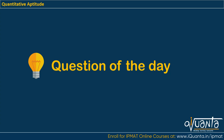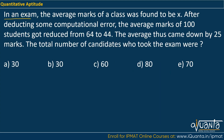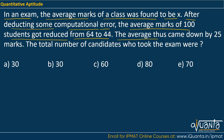Hello everyone. Today's question of the day is based upon averages. I hope you have tried the question and checked how much you have understood in averages. The question is: in an exam, the average marks of the class was found to be x. After deducting some computational error, the average marks of 100 students got reduced from 64 to 44. The average thus came down by 25 marks. The total number of candidates who took the exam were?